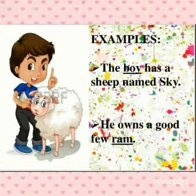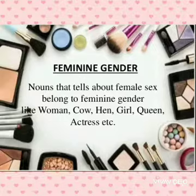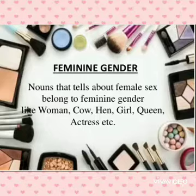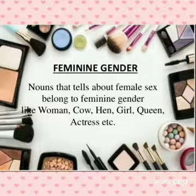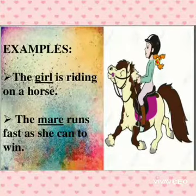Next is feminine gender. Feminine gender are the nouns that tell about female sex, belonging to feminine gender. For example: woman, cow, hen, girl, queen, actress, etc. All these are representing females, so they are the feminine gender.